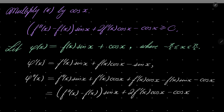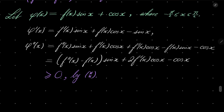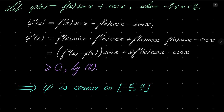Does it look familiar? It should, because it's the left-hand side of our inequality marked double asterisk. So now we know it's greater than or equal to zero by condition double asterisk, which means that phi'' ≥ 0, and therefore phi is convex on minus pi over 2 to pi over 2. We can safely close both sides because our function is continuous, so phi must be convex on the entire closed interval.